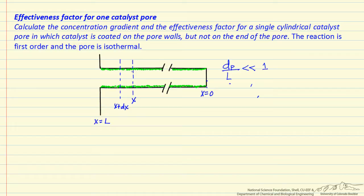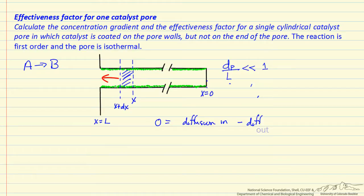I want to do a mass balance for an A goes to B reaction. I'll do a balance on A at steady state, so there's no accumulation. I have diffusion of the reactant into this differential volume, diffusion out, and a rate of generation — or rate of reaction. Since A is being used up, the generation term is negative.